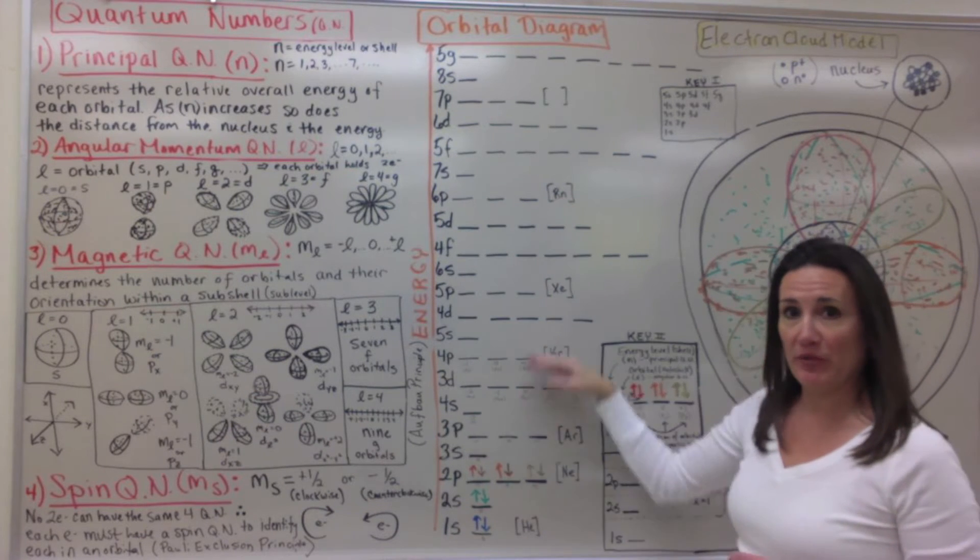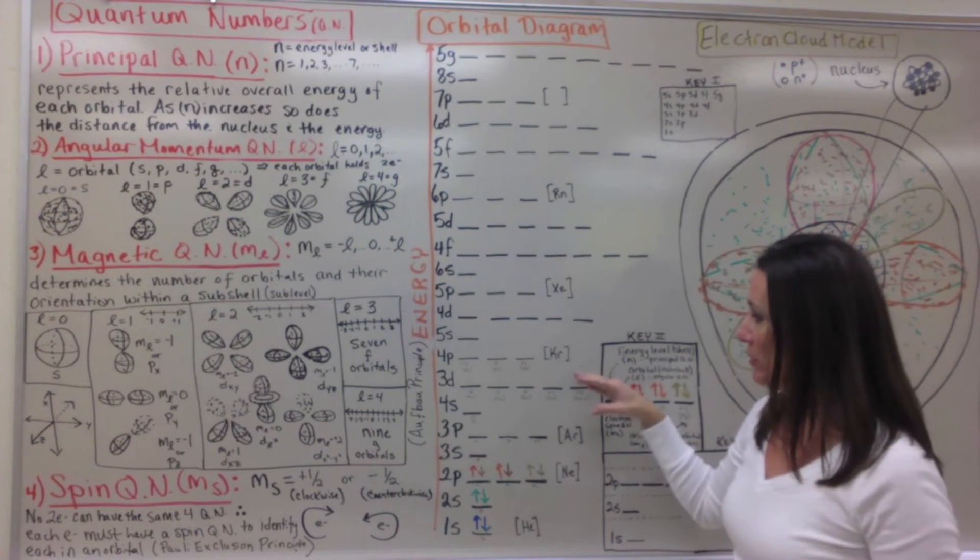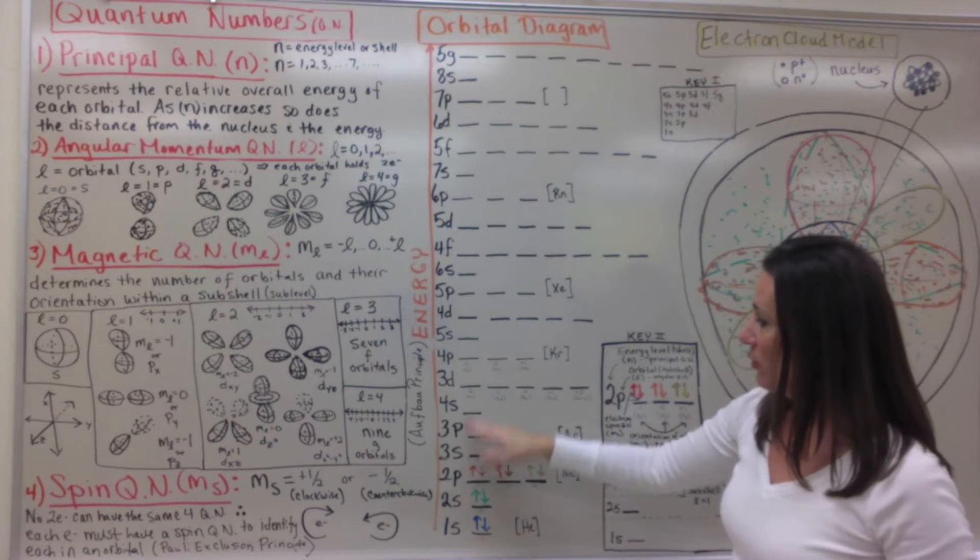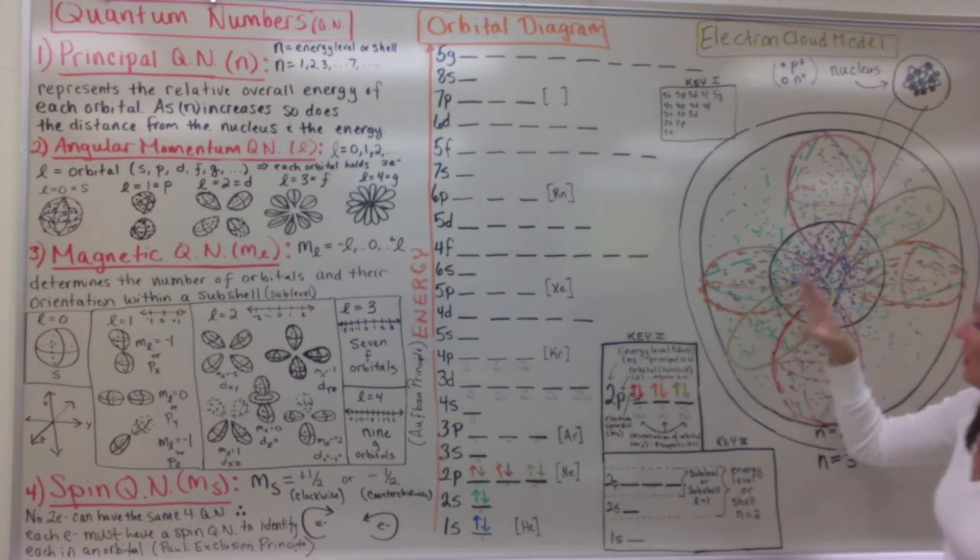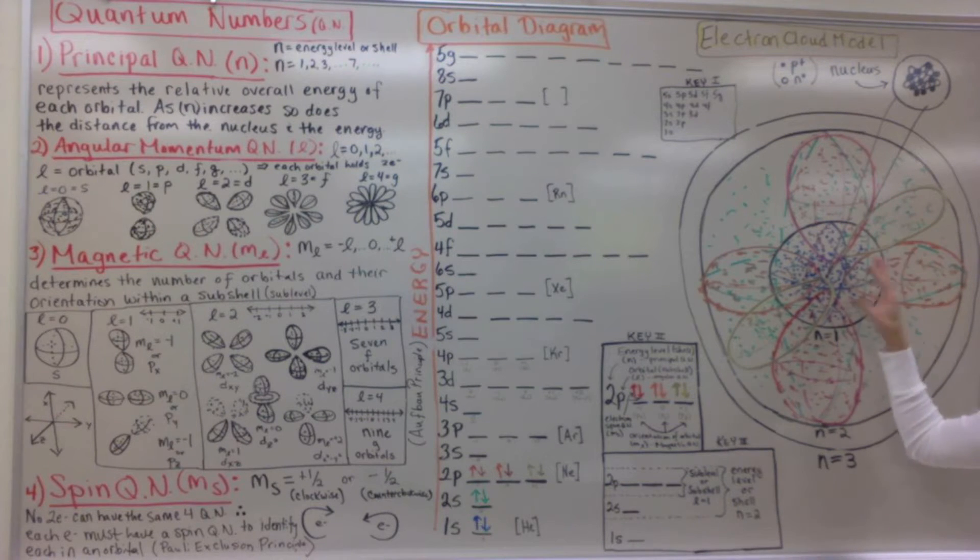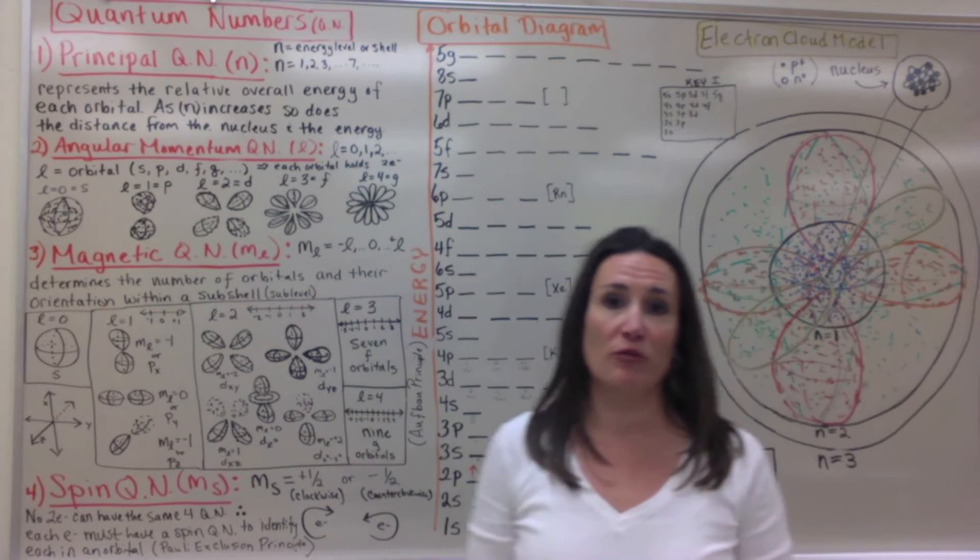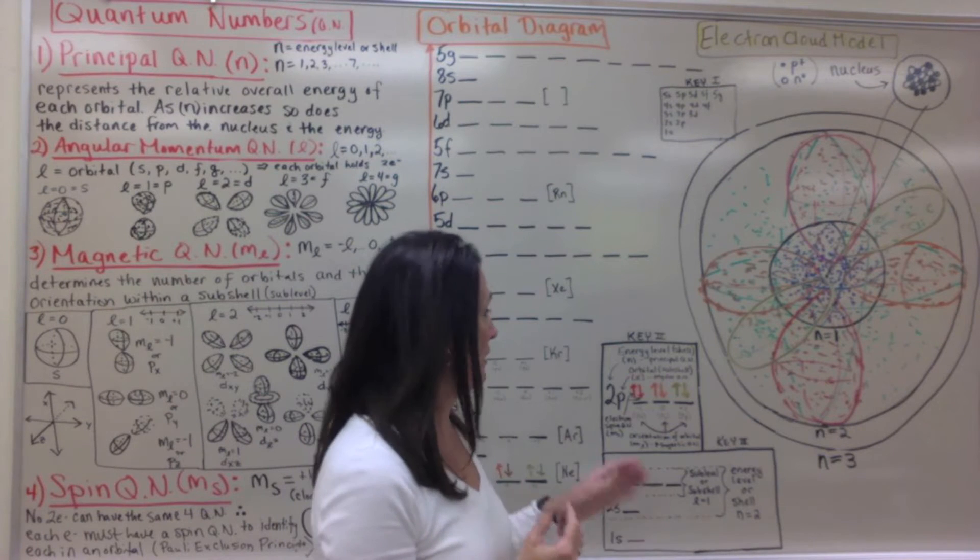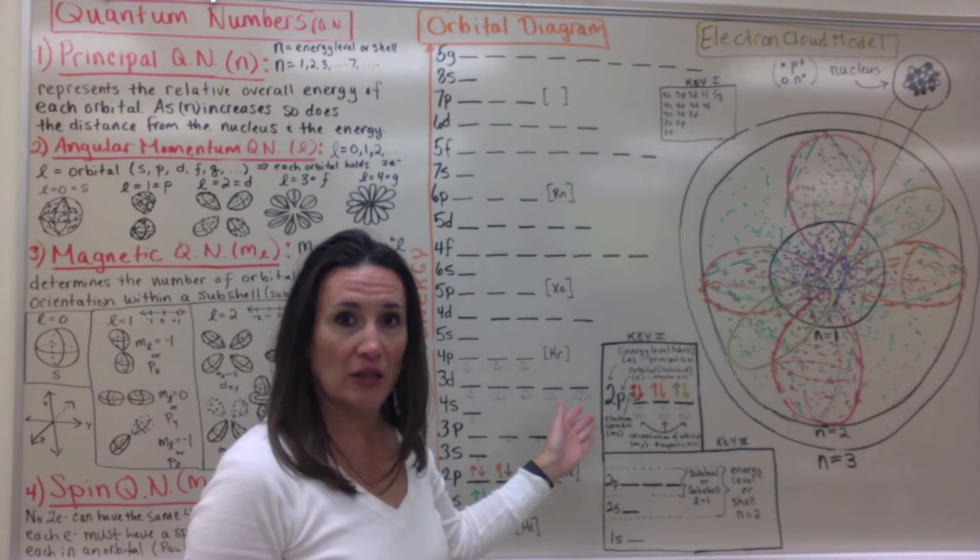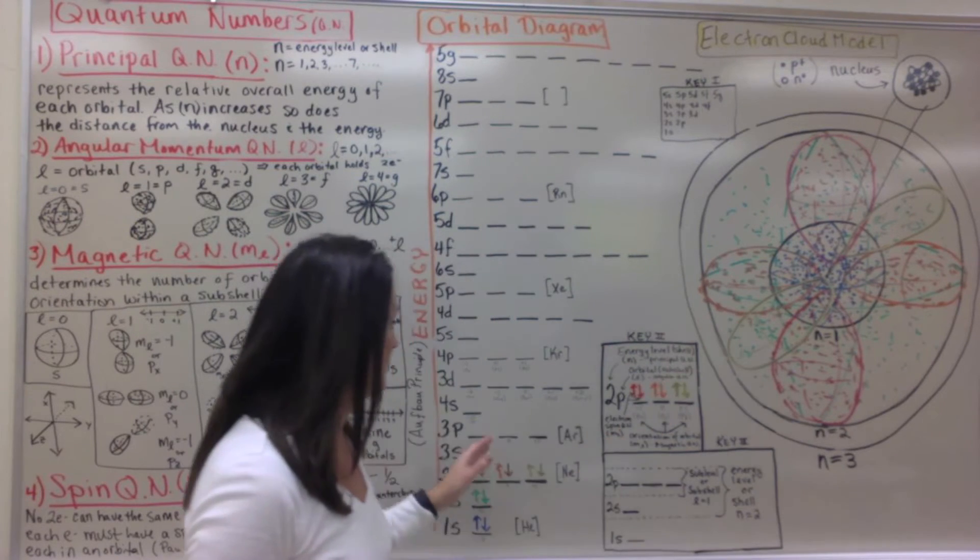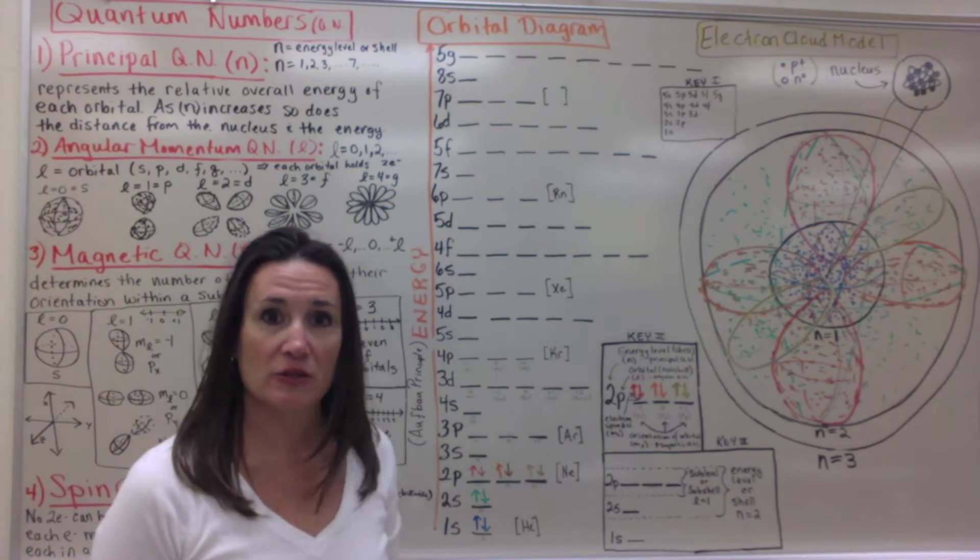The orbital diagram that can be built from those four quantum numbers includes all the orbitals and all the orientations of each orbital. And then the electron cloud model shows you an example of where you might find different electrons around the center of an atom. In this case I stopped with the neon atom and the location of those electrons in their different orbitals around that nucleus.